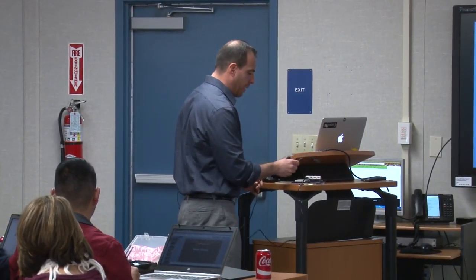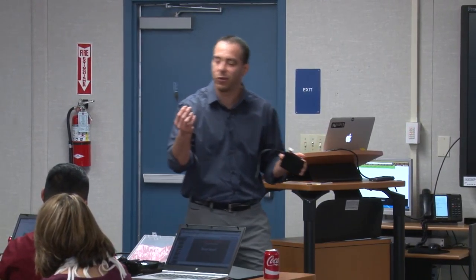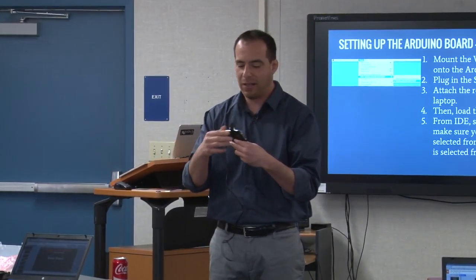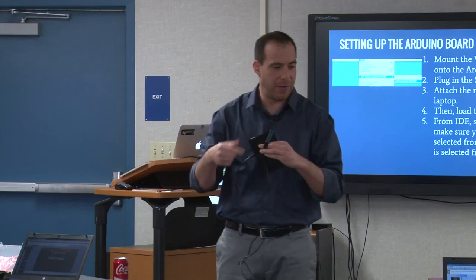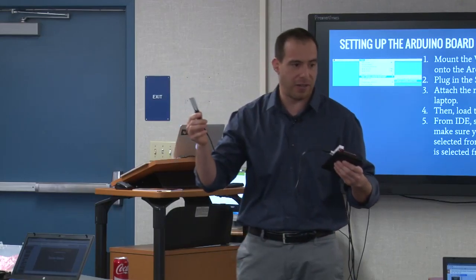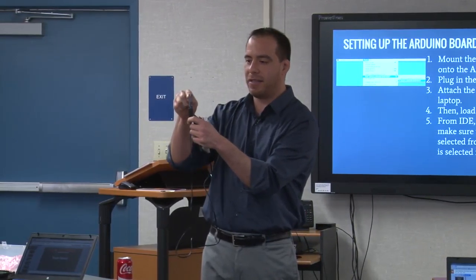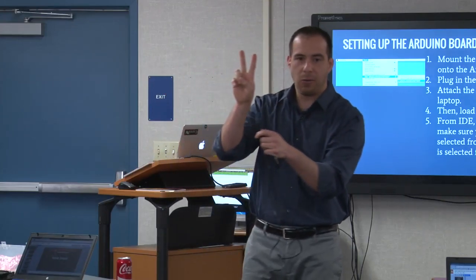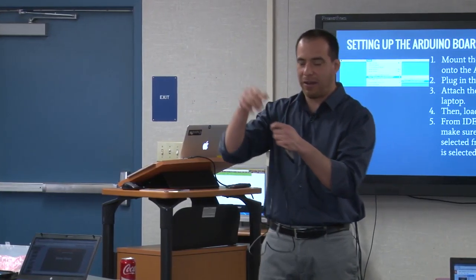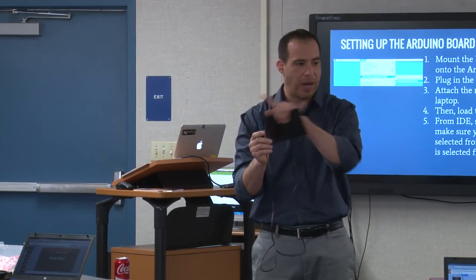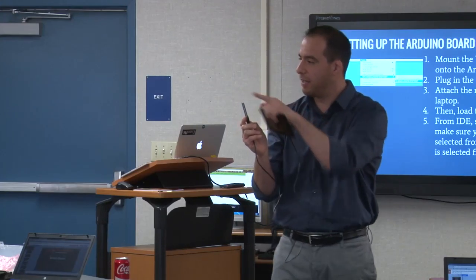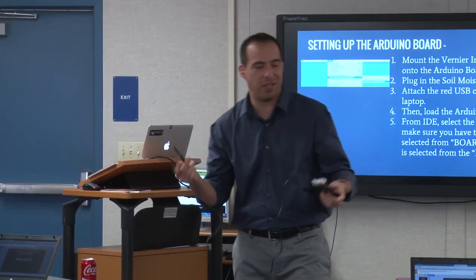The soil moisture sensor works by sending some electricity — and if you remember the whole idea of a circuit, it has to complete a circle, like a big loop. This sensor has a break in the circuit between the two little forks. The moisture in the ground is conductive, so electricity sent through one side of the probe will transmit through the moist soil to the other side. Depending on the amount of conductivity, that's how we get a percentage of soil moisture.